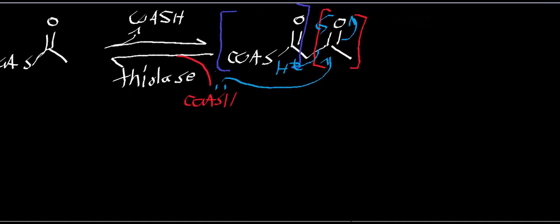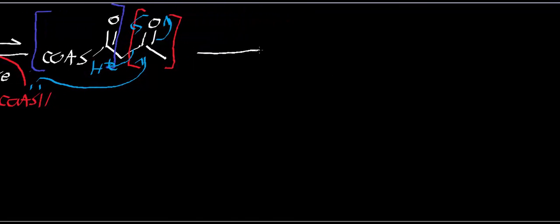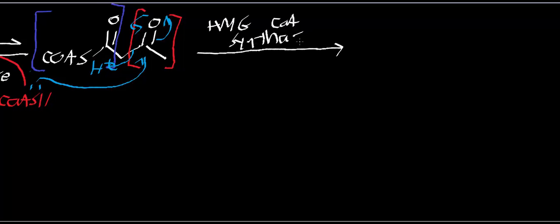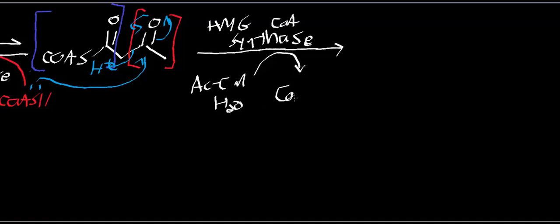The next reaction is catalyzed by HMG-CoA synthase — that stands for hydroxymethylglutaryl coenzyme A synthase. What this enzyme does is take acetoacetyl-CoA plus an acetyl-CoA and a water molecule, release coenzyme A, and essentially transfer two carbons onto acetoacetyl-CoA. This generates something called beta-hydroxy-beta-methylglutaryl coenzyme A.